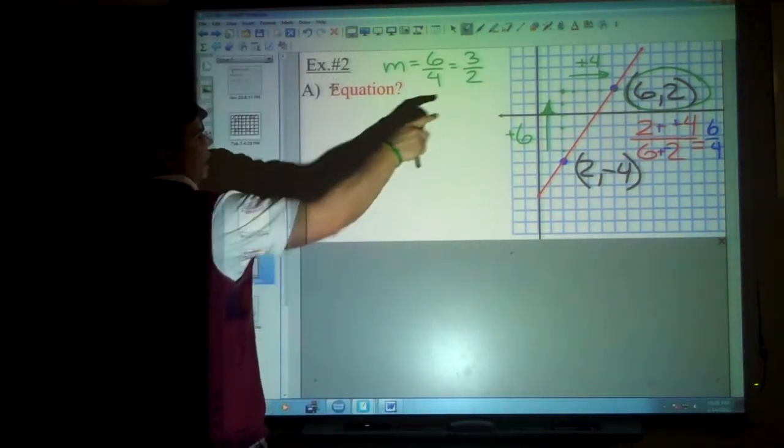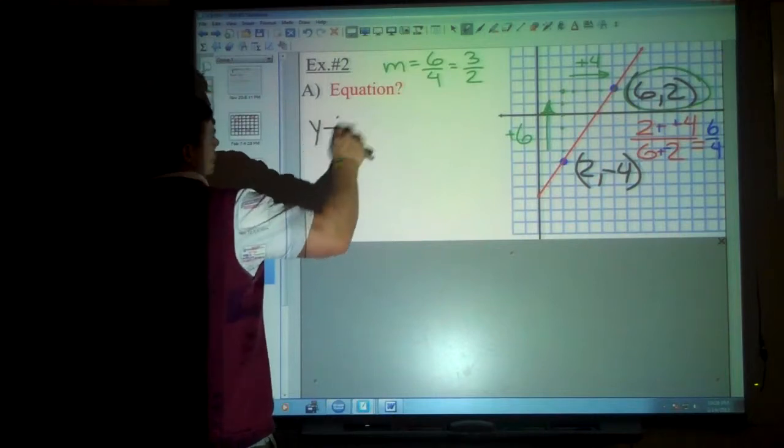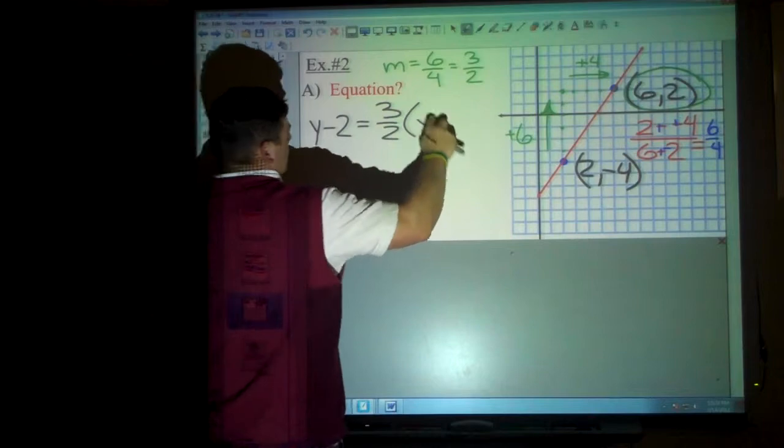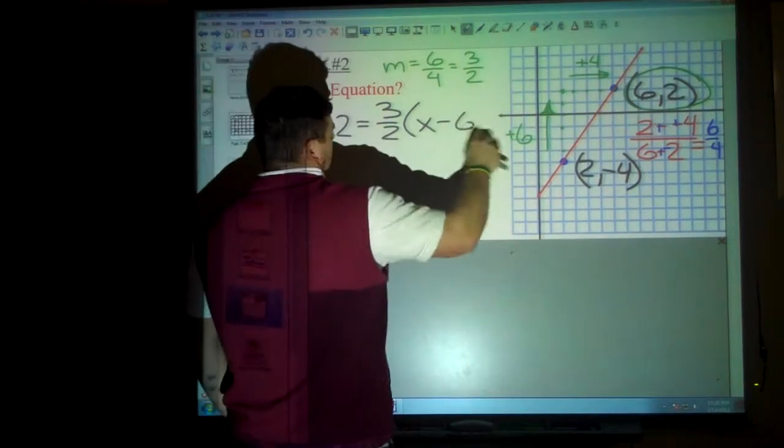So when I set it up, it's going to be y minus the y value up there, which is y minus 2, equals my slope of 3 over 2, and then x minus the x value of 6.